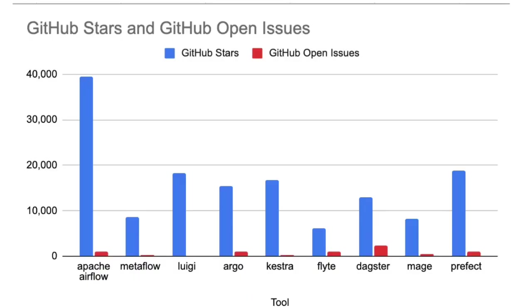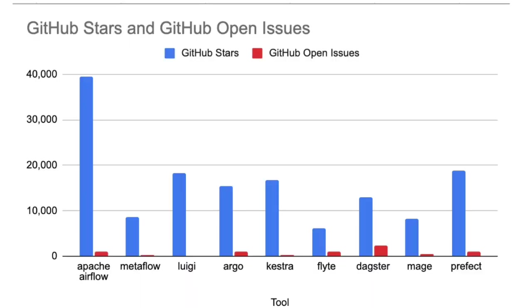Looking at the chart, I'd cross off Flyte — not a lot of stars, not a lot of open issues compared to everyone else. Kestra, strangely, has a ton of stars but hardly any open issues, which is a red flag to me. If you have a lot of stars, you should have some open issues. That doesn't make sense, so I'm crossing that one off the list too.